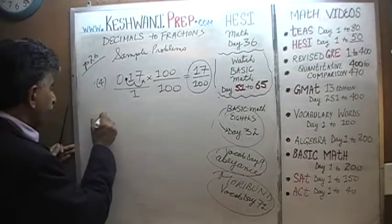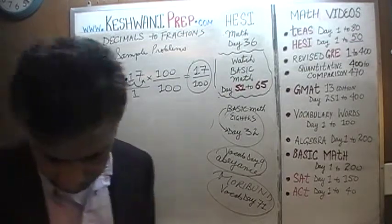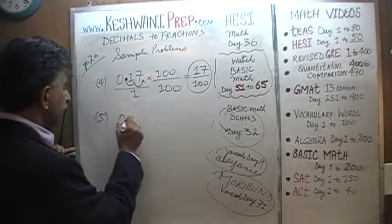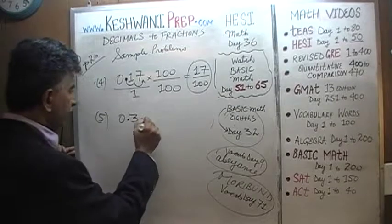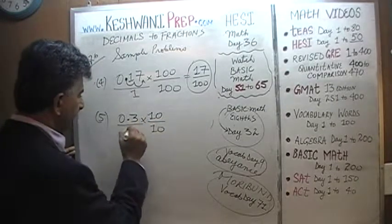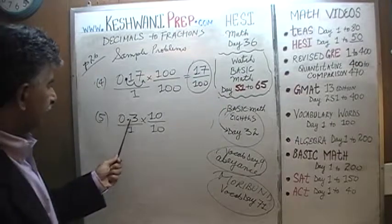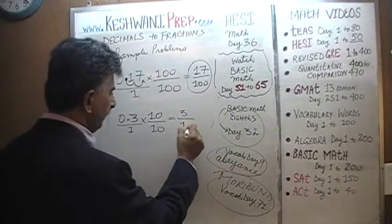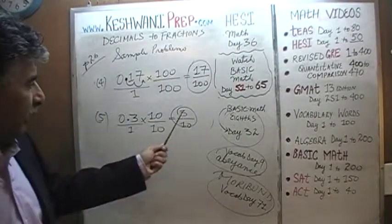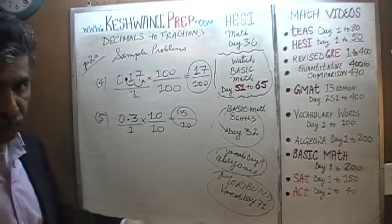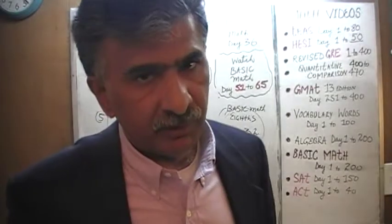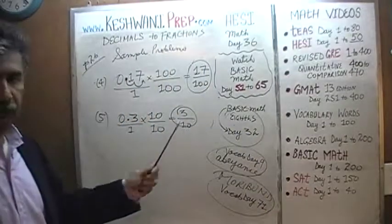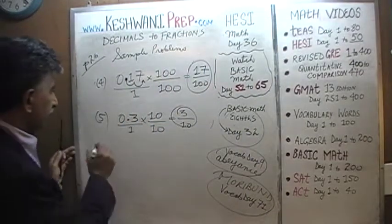Number 5: convert 0.3 into a fraction. Multiply top and bottom by 10: 0.3 times 10 is 3, and 1 times 10 is 10. Since 3 is a prime number, it will have no common factor with anything else. A prime number means you cannot divide that number by anything except by itself and 1. So 0.3 remains 3 tenths — that's the answer.